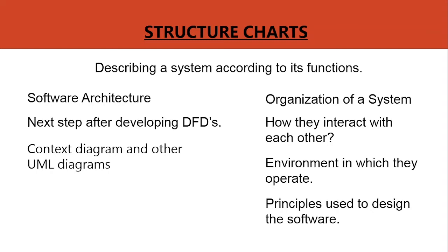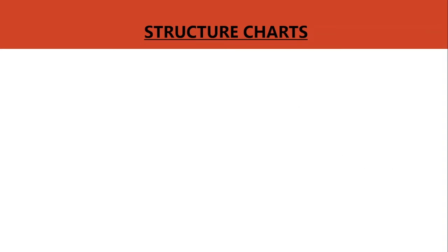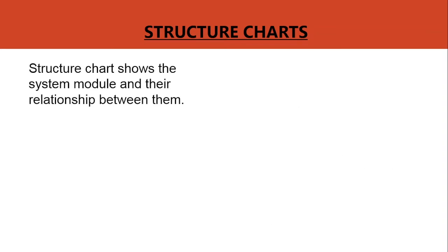The structured chart consists of the modules connecting arrows or lines. Again, the structure chart shows the system module in the relationship between them. And it shows the size and complexity of the system.